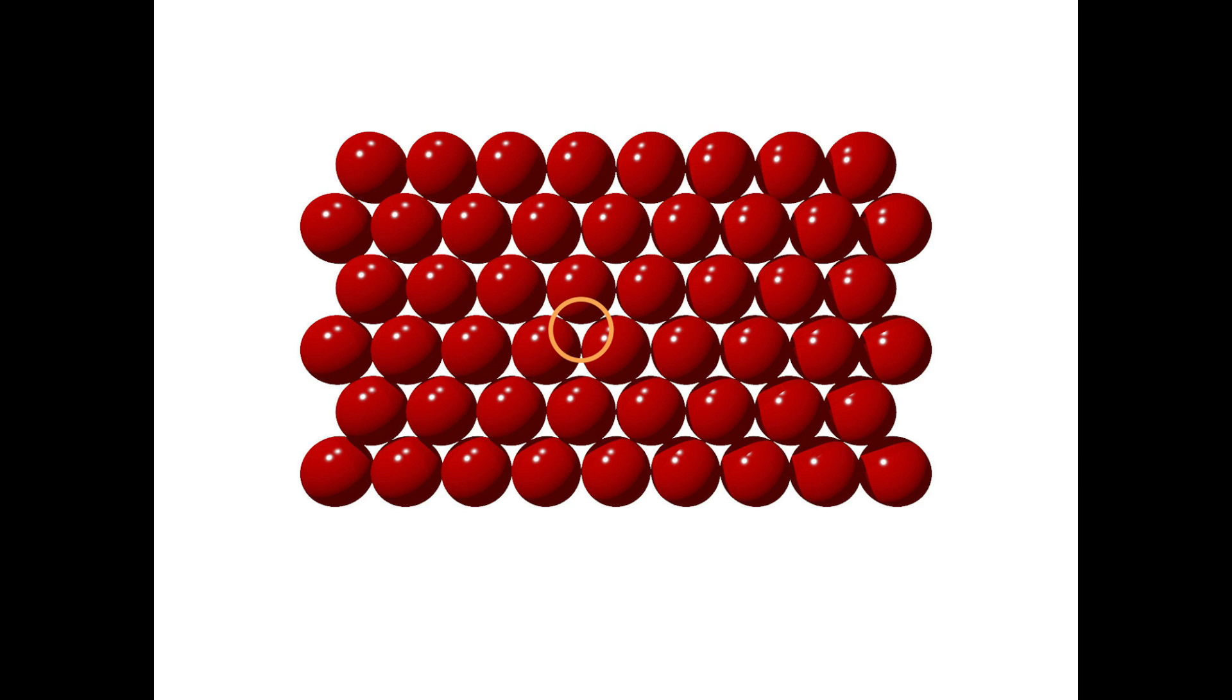In this model, these red spheres represent our anions. If we are to place the cations within this two-dimensional layer, they must be small enough to fit inside the triangular holes.